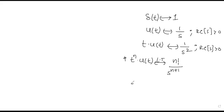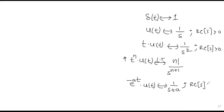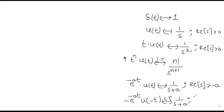All the Laplace transform pairs are important. E^(-aT)·U(T) has Laplace transform 1/(S+a). This is a causal signal, so for all causal signals, ROC is real part of S greater than its pole value minus a. Similarly, for anti-causal negative-sided signal, E^(aT)·U(-T) has Laplace transform 1/(S+a) as well, but the ROC is real part of S less than its pole.